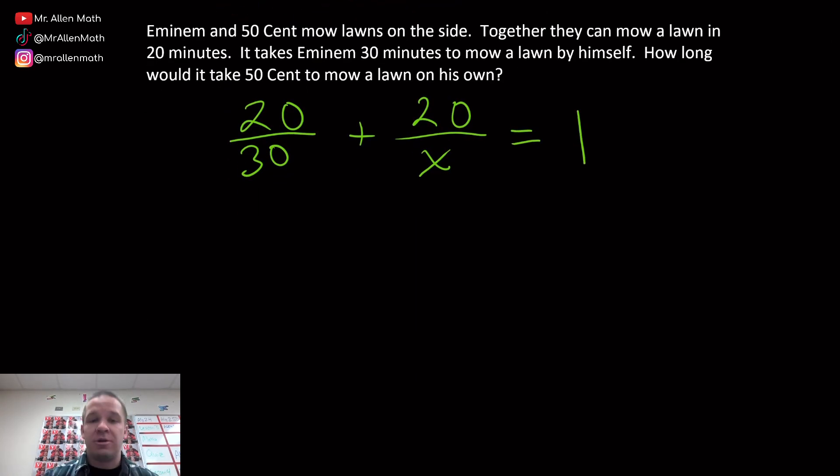So now I have myself a rational equation, a true rational equation. The other one kind of is by definition, but this one, we got that X in the denominator, definitely looking more like a rational. So what's our common denominator? I got 30 in one of my denominators, I got X in the other. So 30X is my common denominator. I'm going to multiply this one by X over X, this one by 30 over 30, and this one by 30X over 30X.